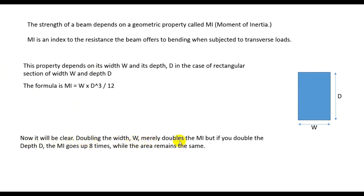It will be clear: doubling the width W doubles the moment of inertia, but if we double the depth D, the moment of inertia goes up 8 times while the area remains the same. The area will remain same but the moment of inertia will increase 8 times. That means if we increase depth instead of width, then it will increase the moment of inertia 8 times, and maximum moment of inertia means maximum protection from bending.